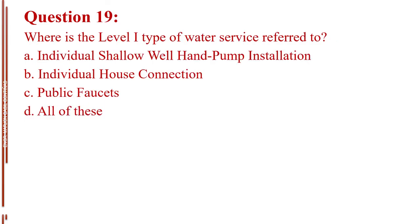Question number 19. Where is the level 1 type of water service referred to? Letter A, individual shallow well hand pump installation. Letter B, individual house connection. Letter C, public faucets. Letter D, all of these. The answer is Letter A, individual shallow well hand pump installation.